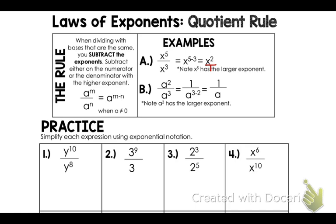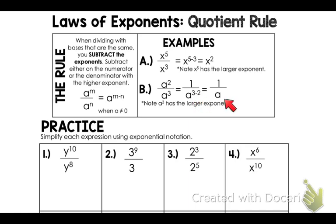The x squared is at the top because the higher exponent is at the top. Now let's look at part B: a to the second power divided by a to the third power. You want to take the highest exponent first and subtract. Because the higher exponent is at the bottom, I'm going to do the subtraction from the bottom, leaving me with a denominator.